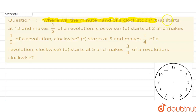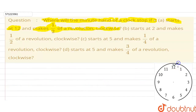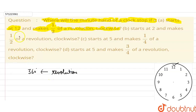For the first part, it starts at 12 and makes half of a revolution clockwise. First of all, let us see how many degrees are there in a revolution. If a minute hand starts at 12 and comes back to 12, it will rotate 360 degrees. So in a revolution we have 360 degrees covered. The first part says it starts at 12 and makes half of a revolution, so half of 360 degrees.